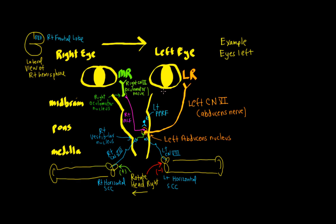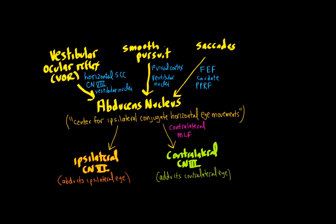So we see that the signal is starting on the right frontal lobe, crosses over, contacts the left abducens nucleus again through an intermediate PPRF that accounts for the rapid eye movements.